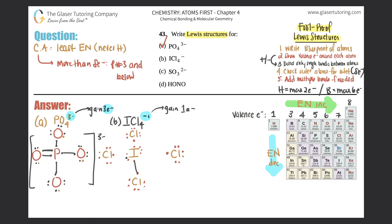Checking outer elements: each chlorine has two, four, six, eight electrons — all good. Checking the center: iodine has two, four, six, eight, ten, twelve electrons. Can iodine have an expanded octet? Yes — it's below period two, it's in period four. So we're good. It had a charge, so we bracket the whole structure and put a negative one. Part B is done.